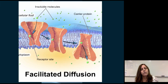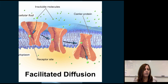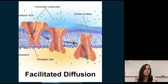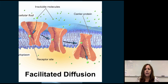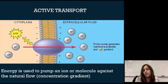Facilitated diffusion is a term referring to the help that carrier proteins can give to move substances more quickly across the membrane, but in the direction they were going anyway. Facilitated diffusion doesn't use any extra energy — it's just helping molecules move more easily.